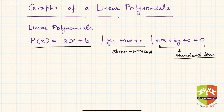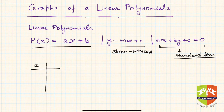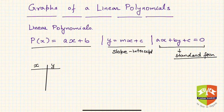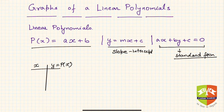To plot a linear polynomial like p(x) = ax + b, what we do is first take some values of x and find the corresponding values of p(x). We have learned how to find values of polynomials in previous sessions. You take some values of x and the corresponding values of y, which is p(x), and you get ordered pairs that are the coordinates of points lying on the polynomial's graph.